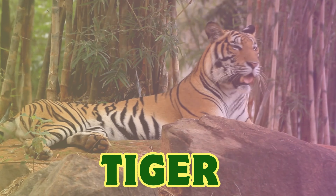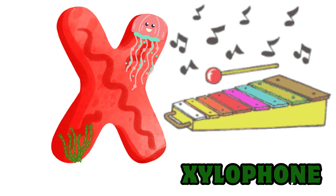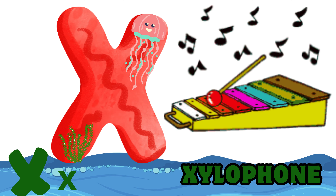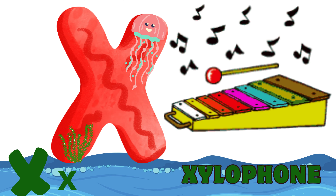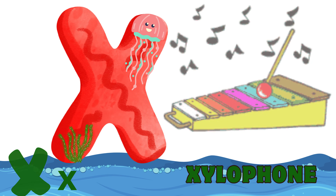U is for Umbrella. U-U-Umbrella, U-Umbrella. V is for Violin. V-V-Violin, V-V-Violin, V-Violin.